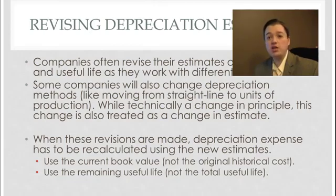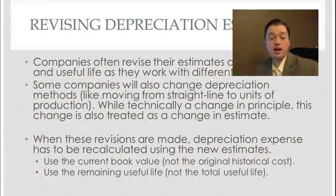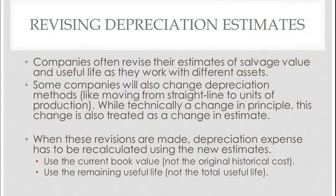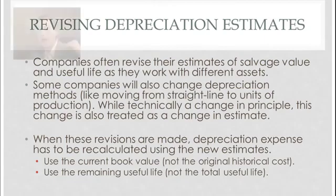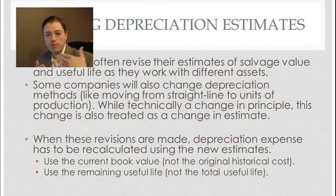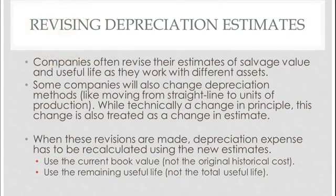Once I get that carrying value, I then subtract my new salvage value — could be the same number, or I may have revised that estimate as well — and that gives me a new depreciation base: from this point until I can sell it, what's left that has to be depreciated. I can divide that, if I'm doing straight line, by the estimated useful life from now until the end of the asset's life. I don't go back and re-divide by the whole life — just from this point until we think the asset will wear out. Same idea with sum of the digits or double declining balance; we just reset and start again.